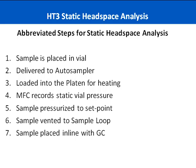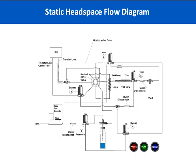With static headspace analysis, the sample is placed into a vial and sealed. That sample is then delivered to the autosampler, where it is loaded into a platen for heating. Upon reaching a final set heating time, it's then going to be mixed for a set period of time. Using our electronic mass flow controller, the static vial pressure is recorded, and that sample is pressurized to a user-defined set point. The sample is then vented through a fixed volume loop. The loop contains the sample at this point, and it's then valve actuated so that it can be placed in line with the GC column for separation and detection.